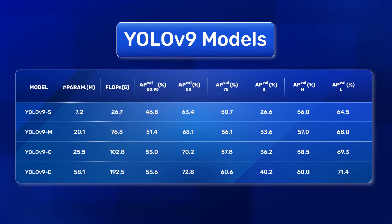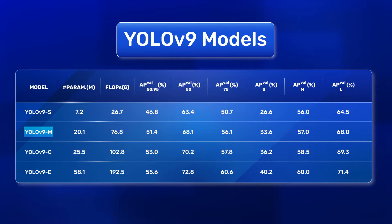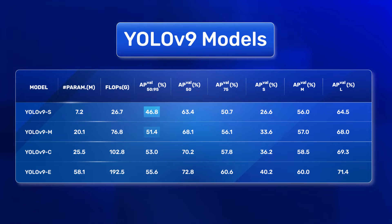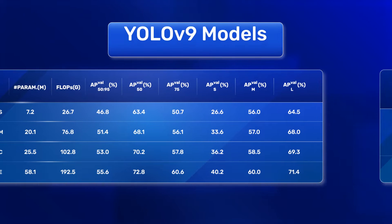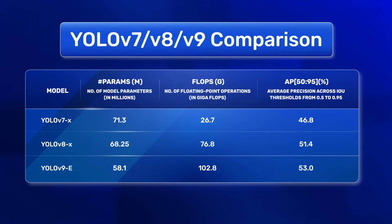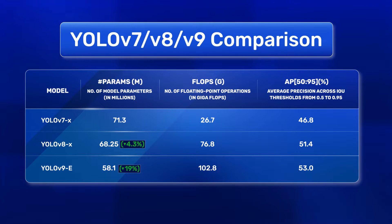YOLO v9 has four sizes available: Small, Medium, Compact and Extended. As the number of parameters increases, the average precision increases, which is usually the case. Comparing all the largest models from YOLO v7, v8 and v9, we see the number of parameters decreases with each iteration while the average precision increases.